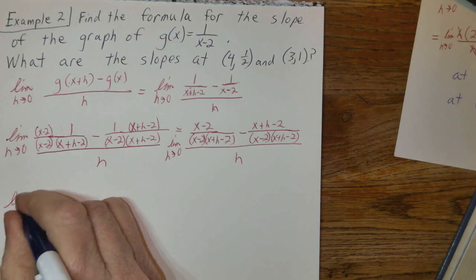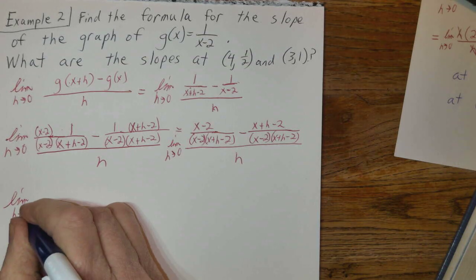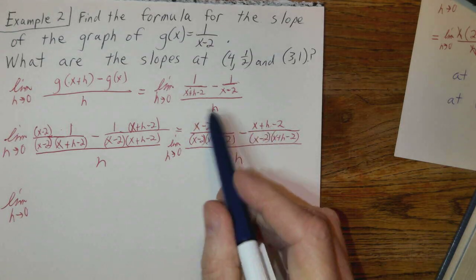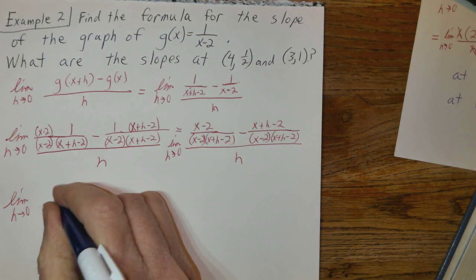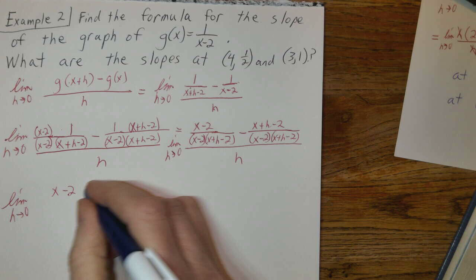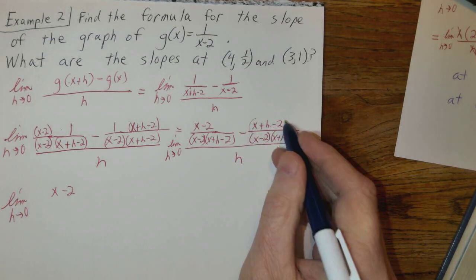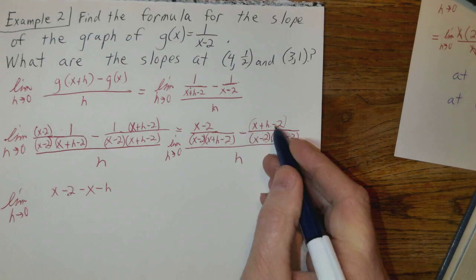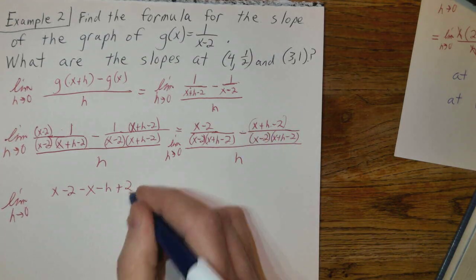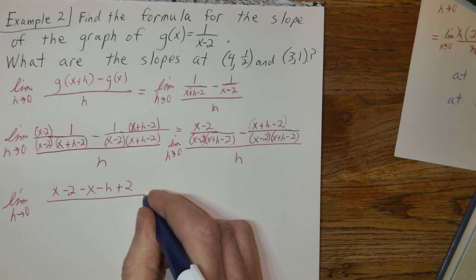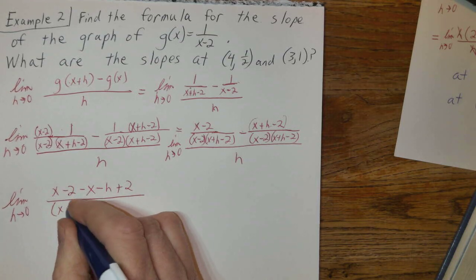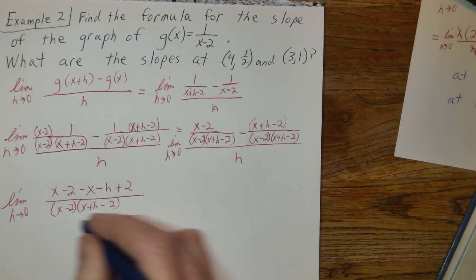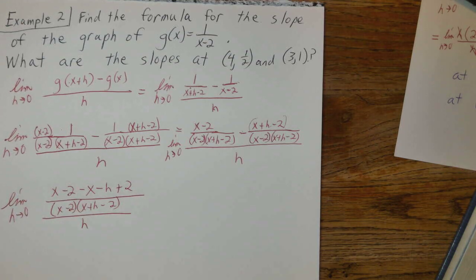For the next step, I want to combine my numerators. Let's go x-2, and this is minus, so that's minus the whole thing. Distribute that minus: minus x, minus h, and a minus minus is plus 2. And that is over (x-2)(x+h-2), and we still have h down there.